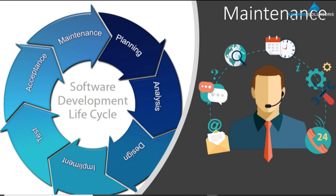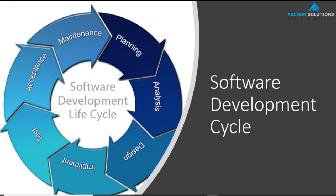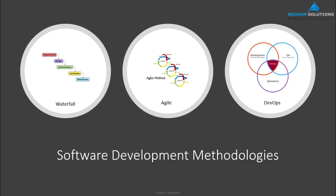So those are the seven steps involved in the software development life cycle, or SDLC for short. Professionals around the world experimented by tweaking these life cycles — changing the order of steps, the frequency, and the duration of each step. The results were amazing. Among several methods available, the most popular ones are waterfall, agile, and DevOps, and these are the three methodologies we will focus on.